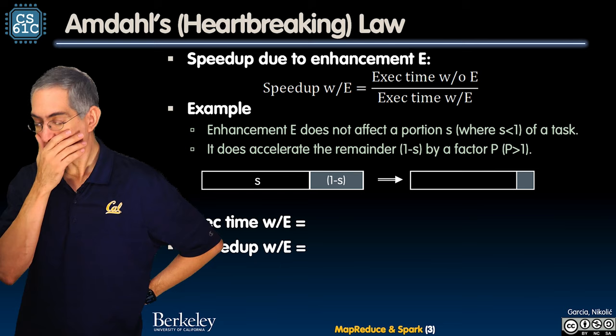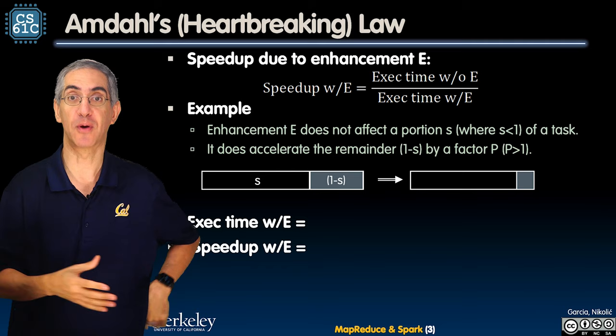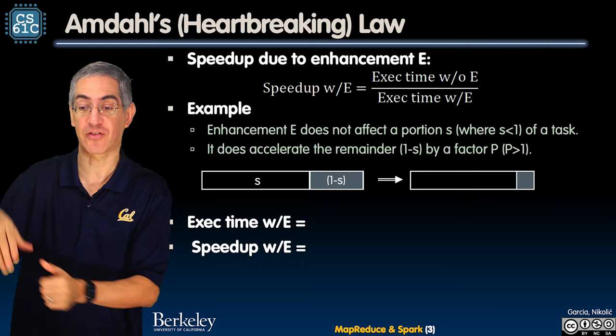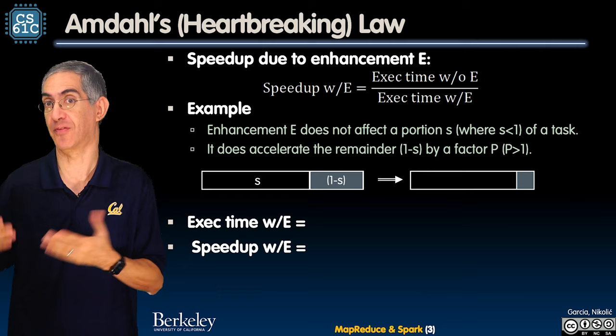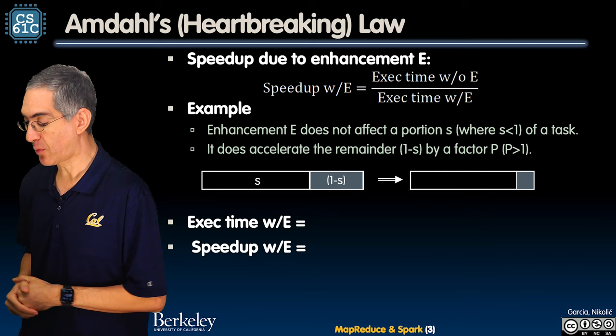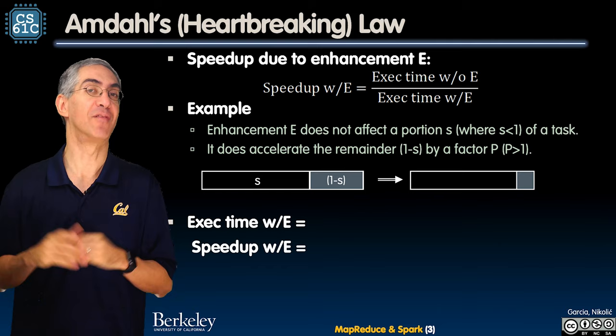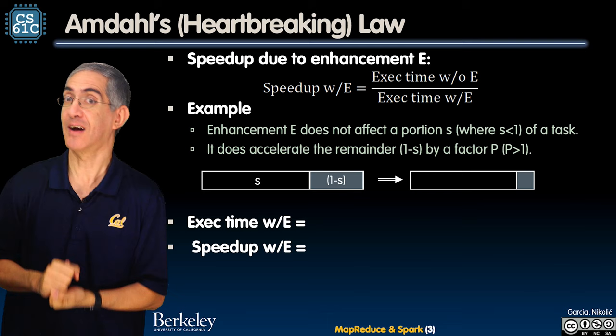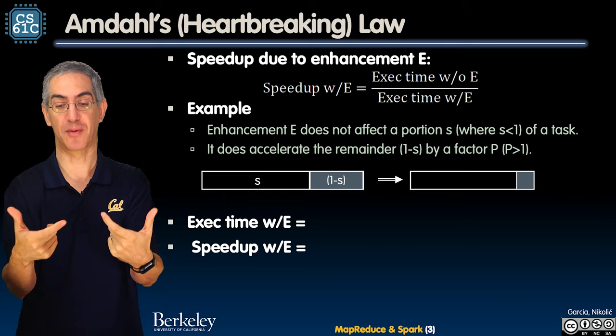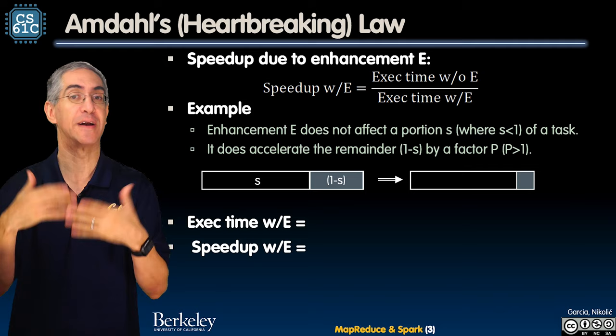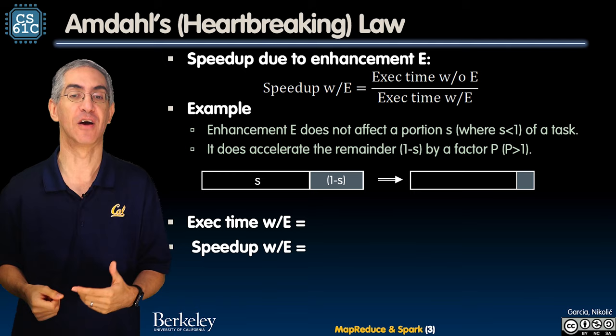Let's think about the problem. Every challenge you have — and this is particularly true with code that has maybe a part that can be parallelized, like in OpenMP, here's a parallel section and a part that isn't, a critical section or a serial part, maybe the setup and gather part at the end. The enhancement E doesn't affect a portion S — S is a fraction of a task. But it does accelerate the remaining part, which is 1 minus S. So 1 minus S is the parallelizable part and S is the fraction that doesn't get changed. And it's going to accelerate by a factor of P, where P is bigger than 1.